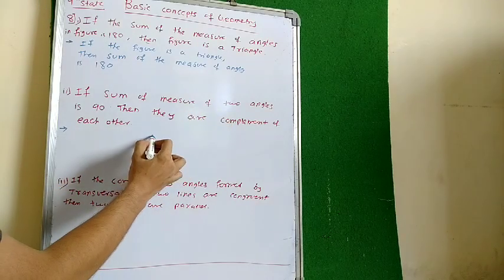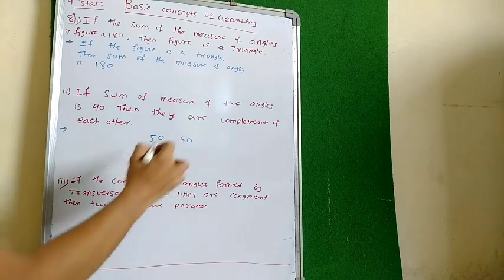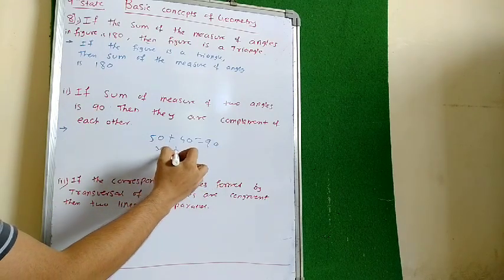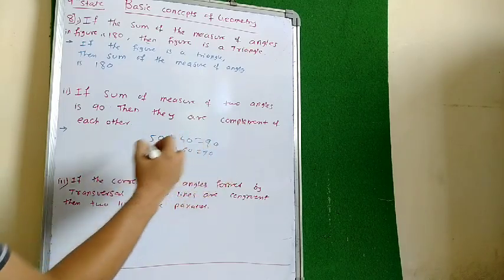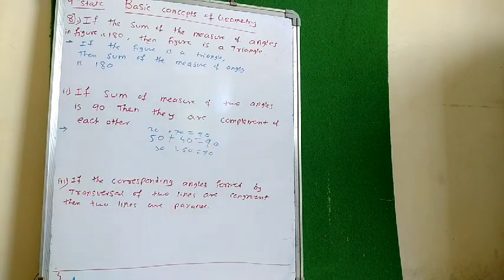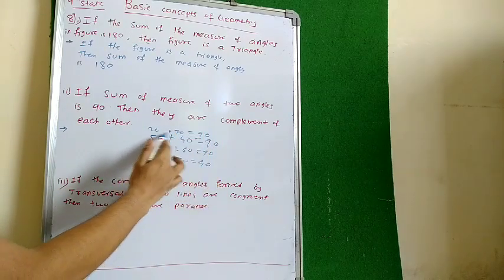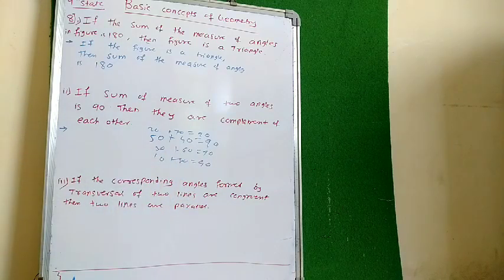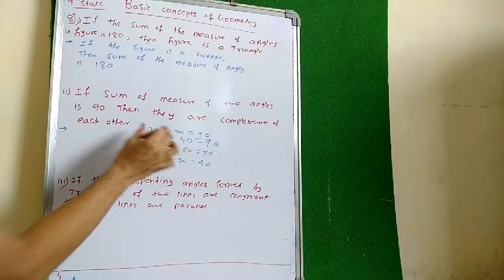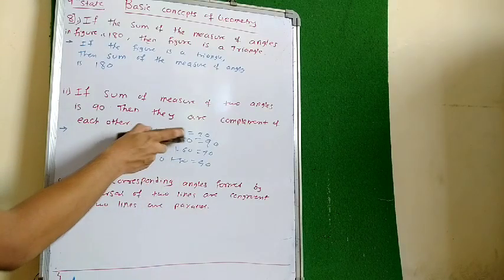First of all, what are complementary angles? If one angle is 50 and the other is 40, their sum is 90. One angle is 30 and the other is 60, sum is 90. One angle is 20 and other is 70, sum is 90. One angle is 10 and other is 80, sum is 90. If the sum of any two angles is 90 degrees, then this pair is called a complementary pair or complementary angles.